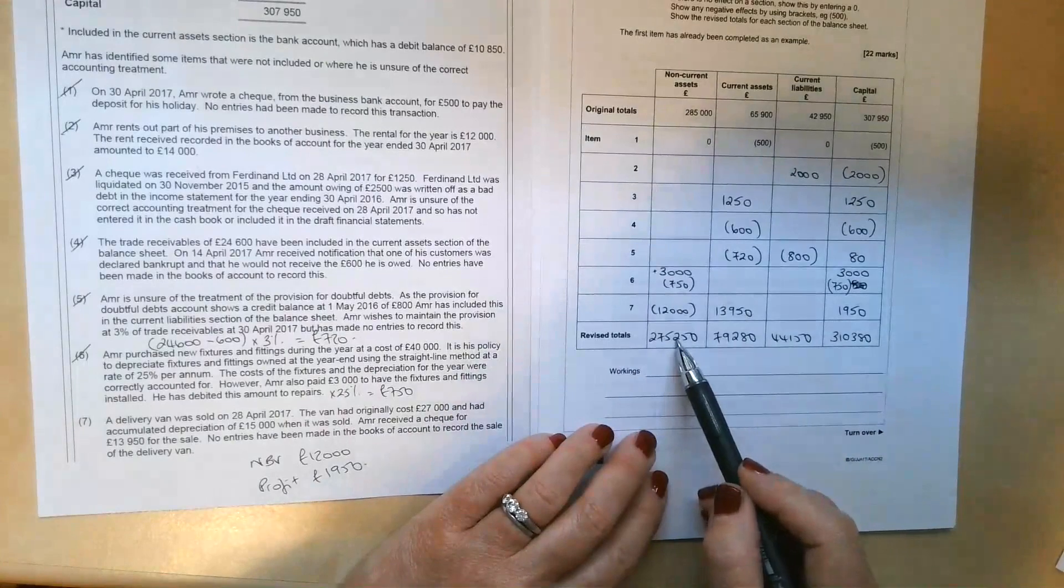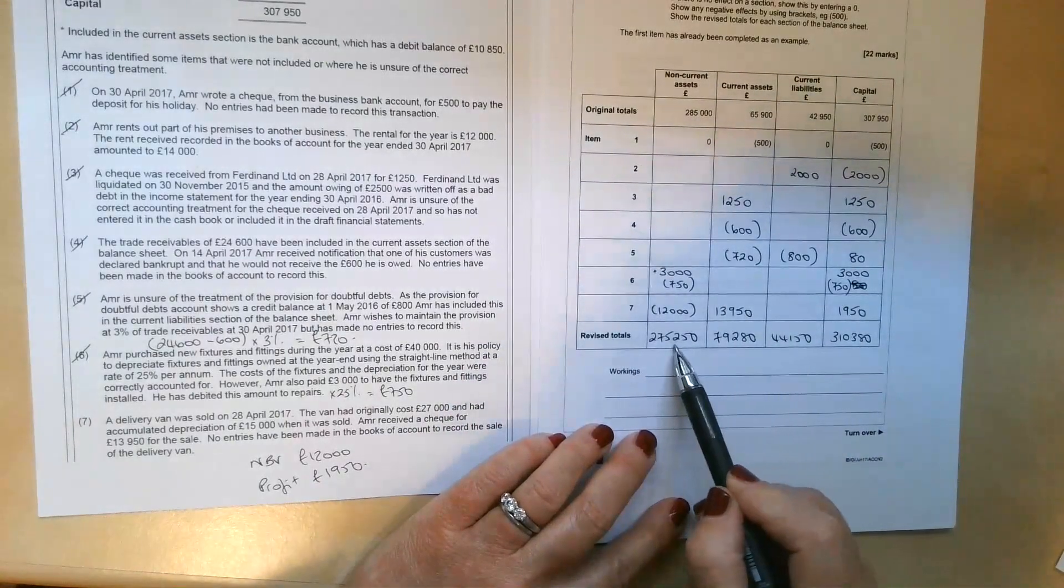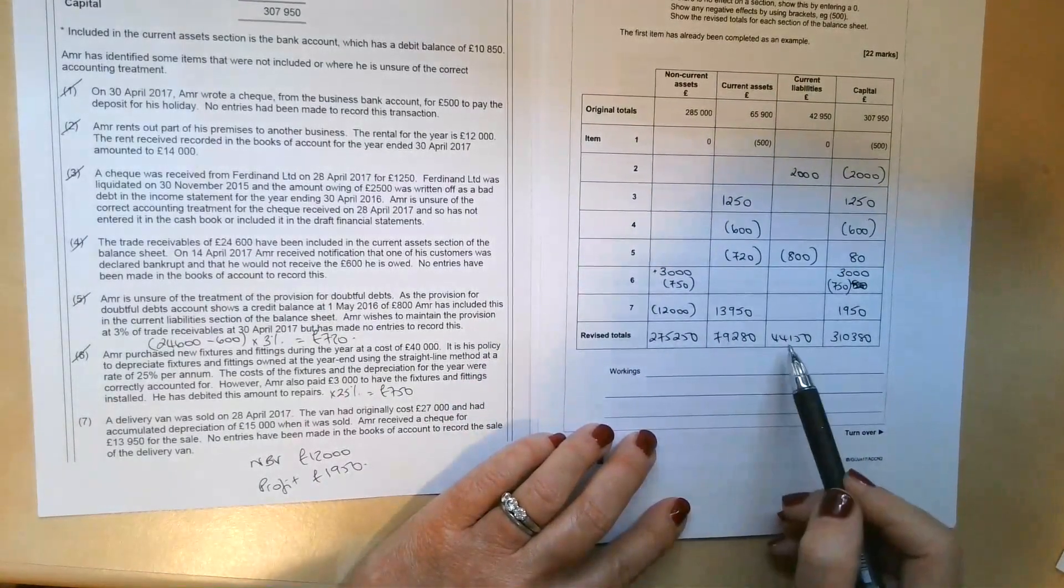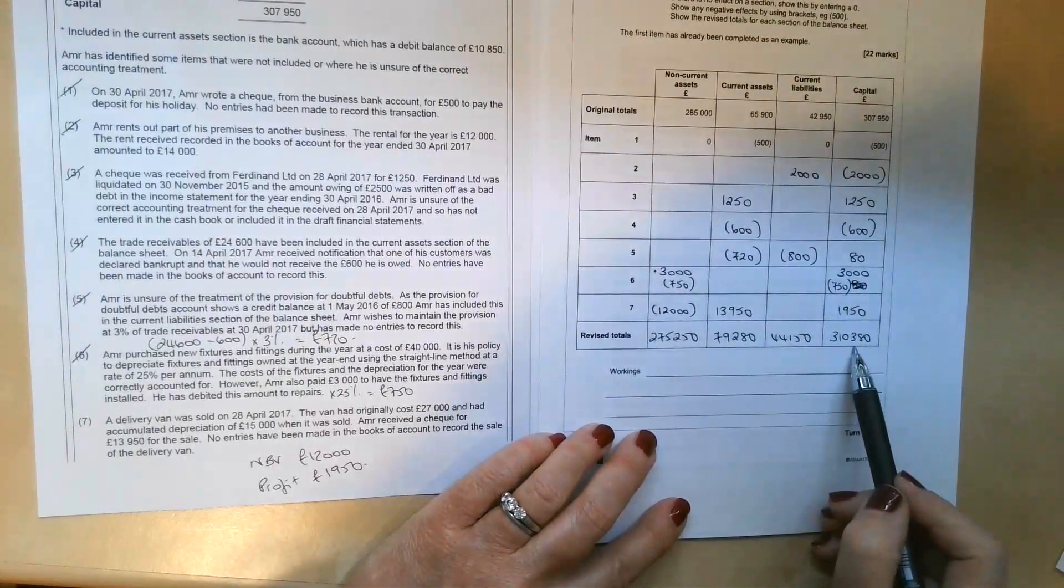And then when we get down to the bottom, we could just do a quick double check that the total of the non-current assets plus the current assets minus the current liabilities does equal that 310,380.